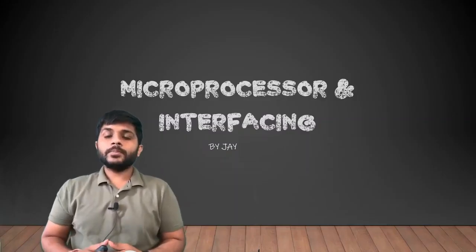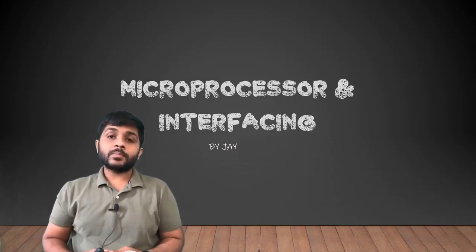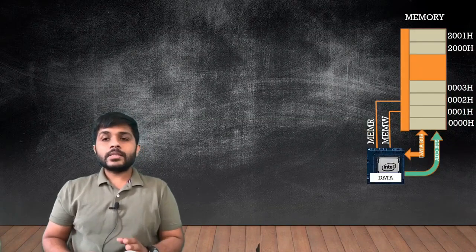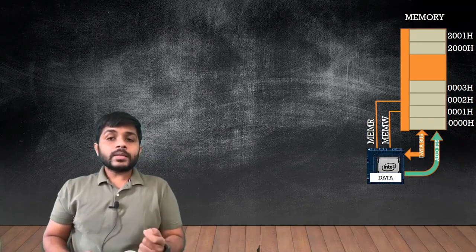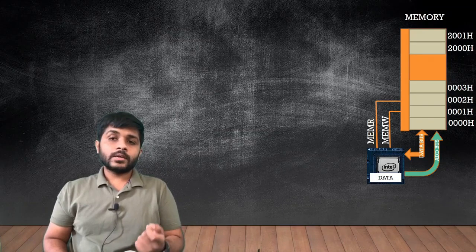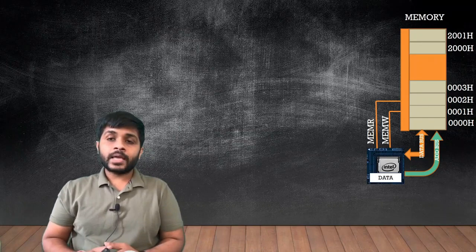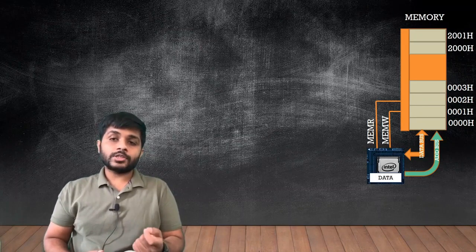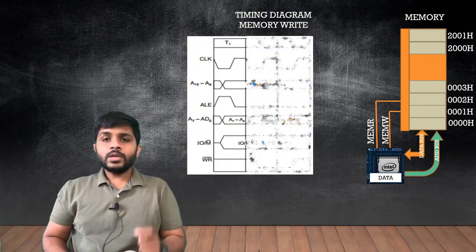Hi everyone, I'm Jay and today we are going to see the timing diagram of the memory write machine cycle. You can see on the screen there is a microprocessor which is connected to the memory. To connect the microprocessor with the memory, we need some control signals such as memory read and memory write, and we need some buses such as the data bus and the address bus.